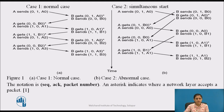The notation for sending frames is: sequence number, ACK (acknowledgement), and packet number. For example, A sends 1, 0, A1 — here 1 is the sequence number, 0 is the acknowledgement for frame with sequence number 0, and A1 is the packet number. An asterisk indicates the network layer accepts a packet. In Figure A, each frame arrival brings a new packet for the network layer, with no duplicates.